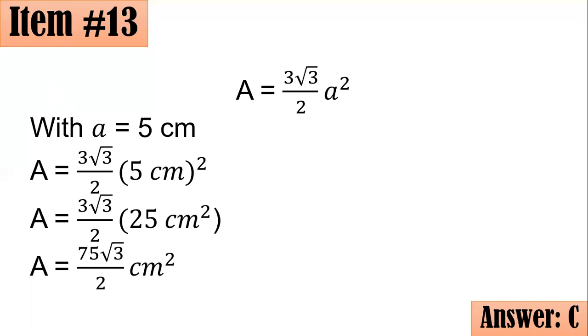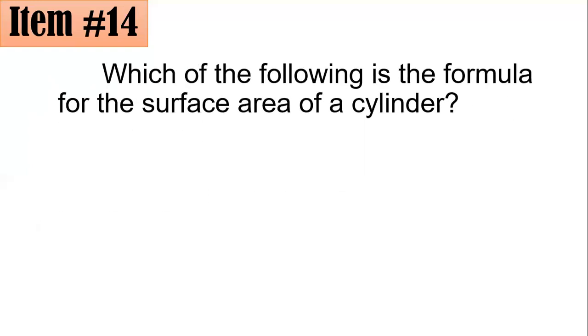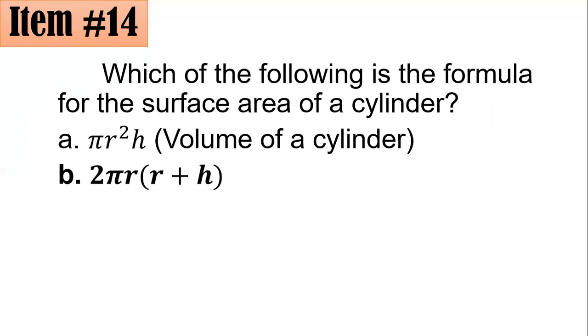Moving on to item number 14. Which of the following is the formula for the surface area of a cylinder? Is it A, B, C, or D? For this one. If we have letter A, pi R squared H, it's actually the volume, the formula for a volume of a cylinder. In fact, letter B here is the correct answer. That's 2 pi R times the quantity R plus H.